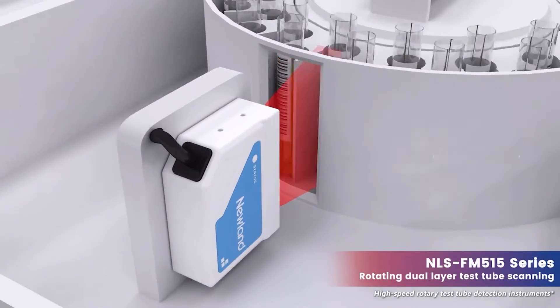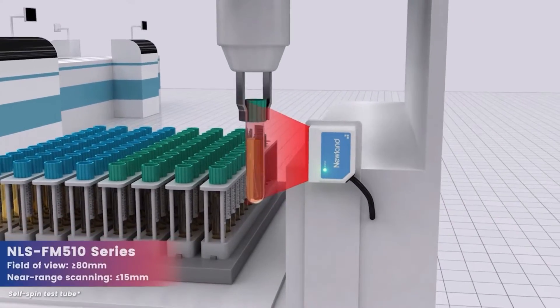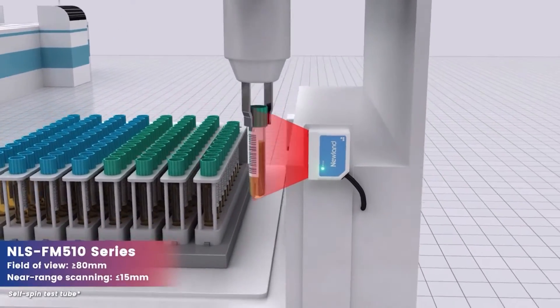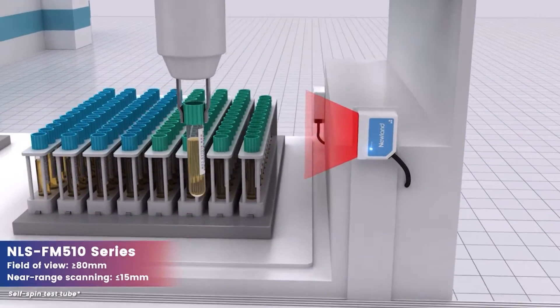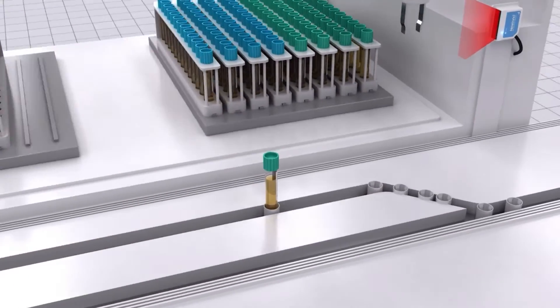Equipped with a wide field of view, the FM510 series was engineered for decoding high-speed moving barcodes on test tubes at short distances.